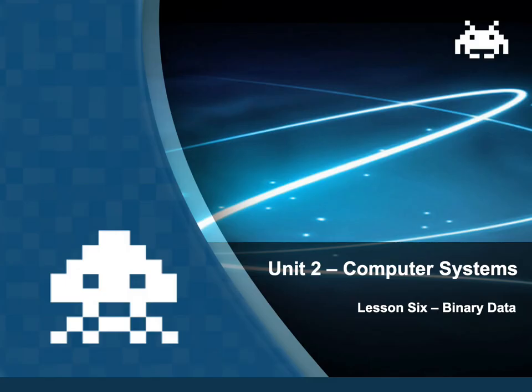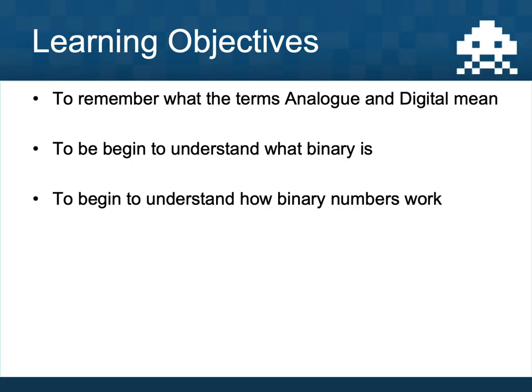This is the sixth lesson in the Year 7 computer systems series of work. In this lesson we're going to be looking at something called binary data. We're going to remember what the terms analog and digital mean from last time, begin to understand what binary is, and have a look at binary numbers and a little bit about binary text.